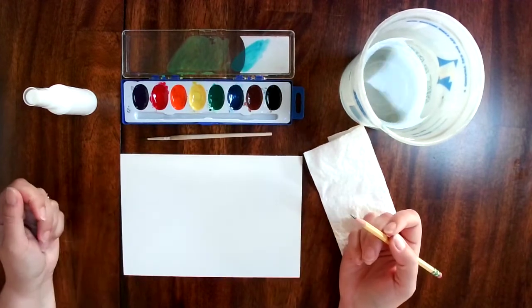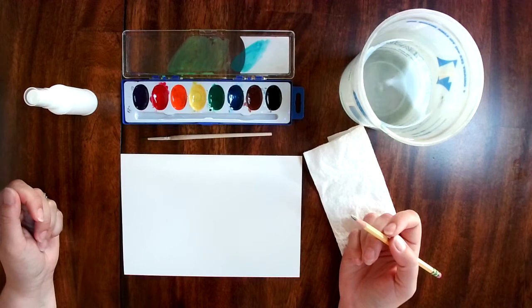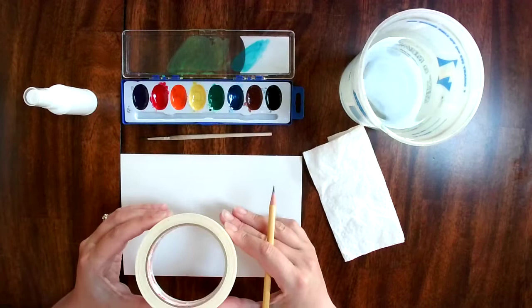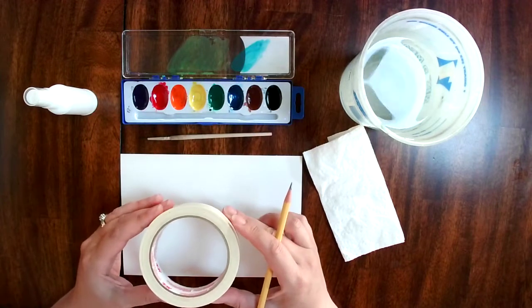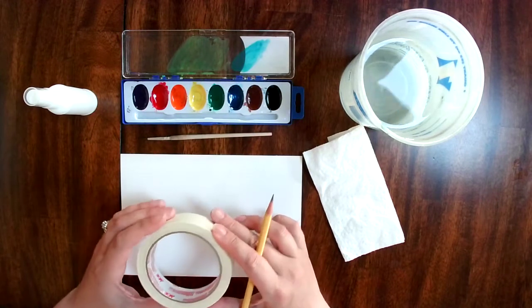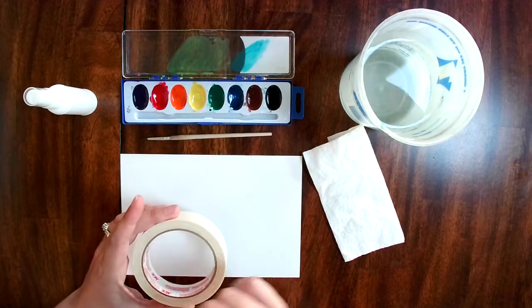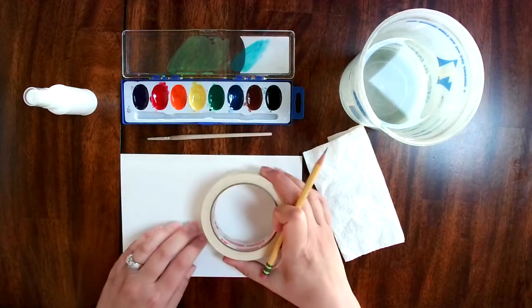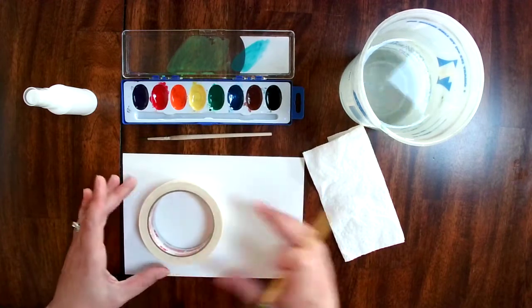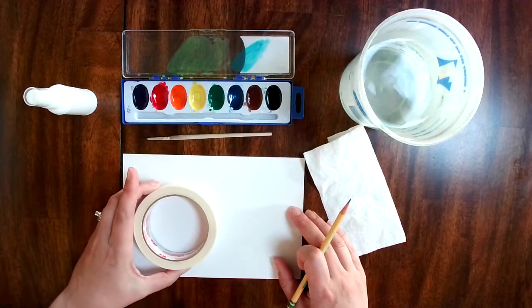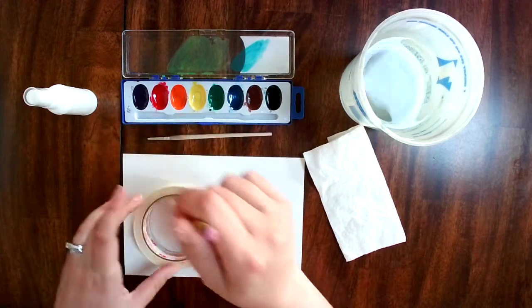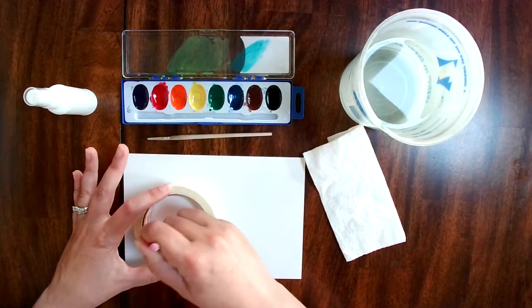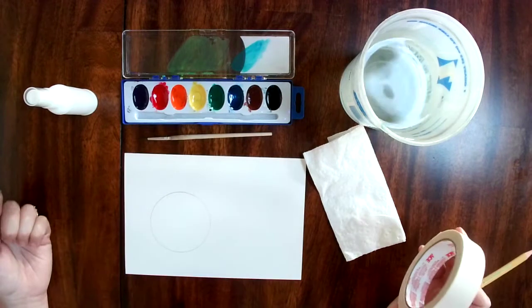To make our watercolor planet, I need to make a circle, and sometimes the easiest way to make a circle is to find something that you can trace. So I have a roll of tape, and you can also use something like a yogurt lid or some other plastic lid - even the bottom of a cup would work fine too. I'm gonna put my planet maybe just a little bit off-center and trace on the inside, and that way we get a perfect circle.